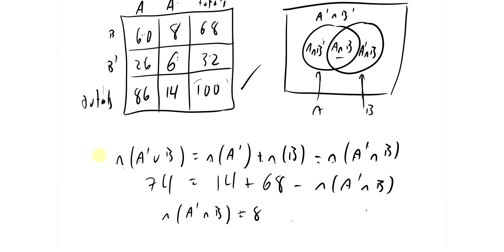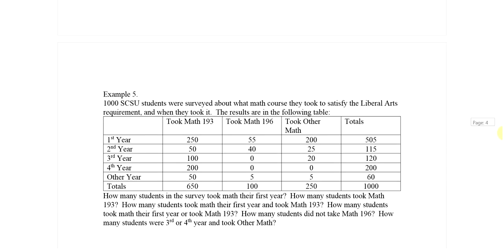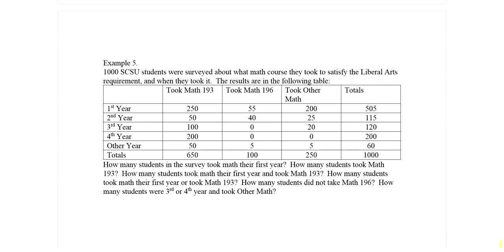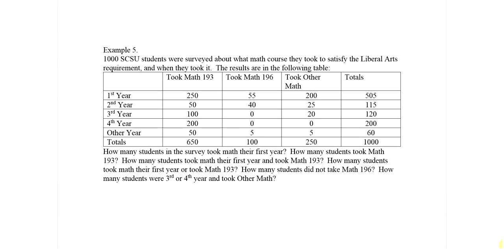Addition principle: anytime you have an 'or,' you break it up into the number of things in this set plus the number of things in that set minus the number of things in both. That's the addition principle.